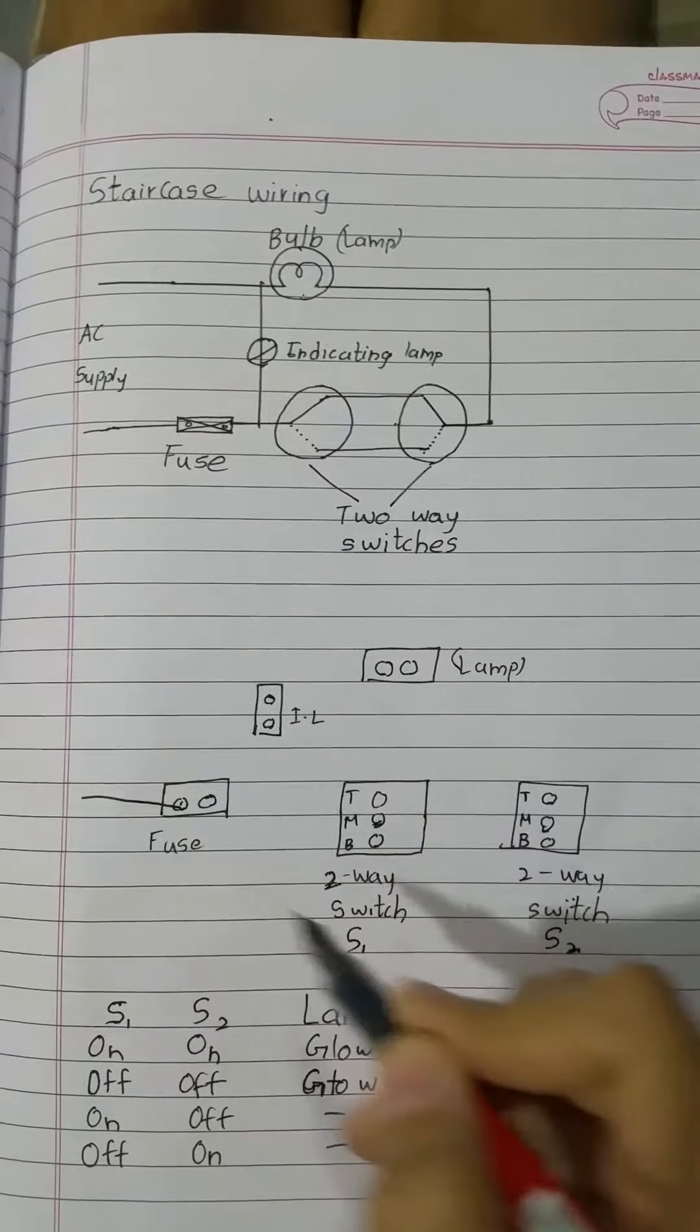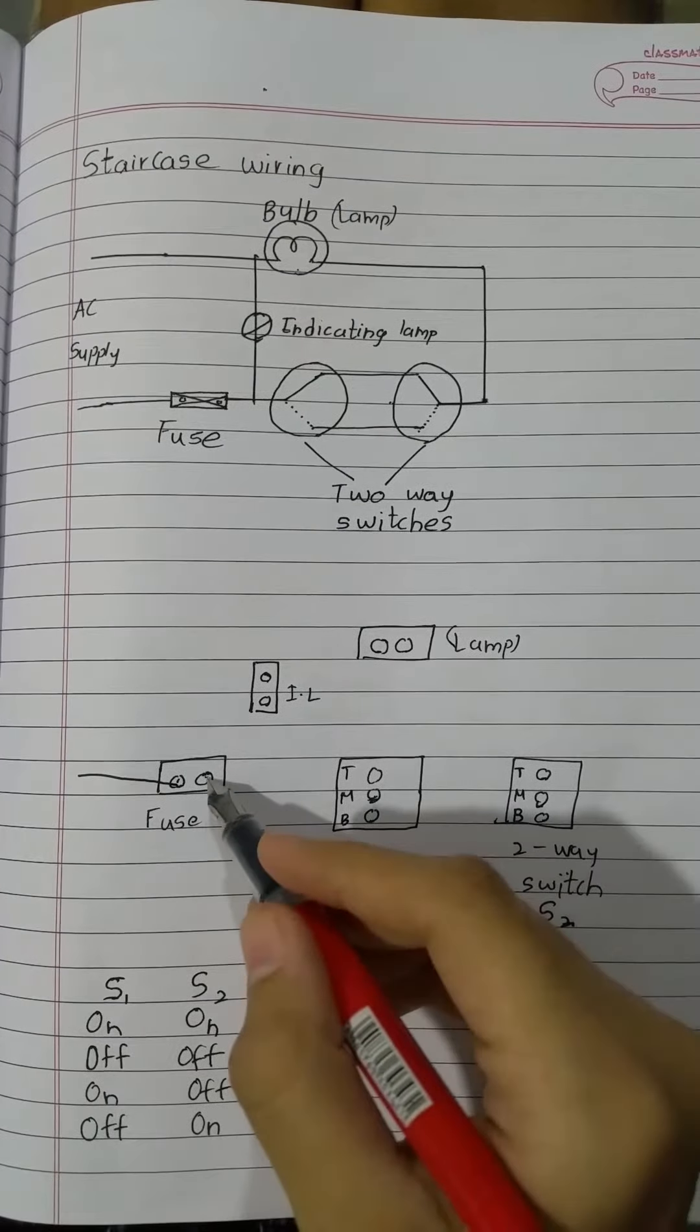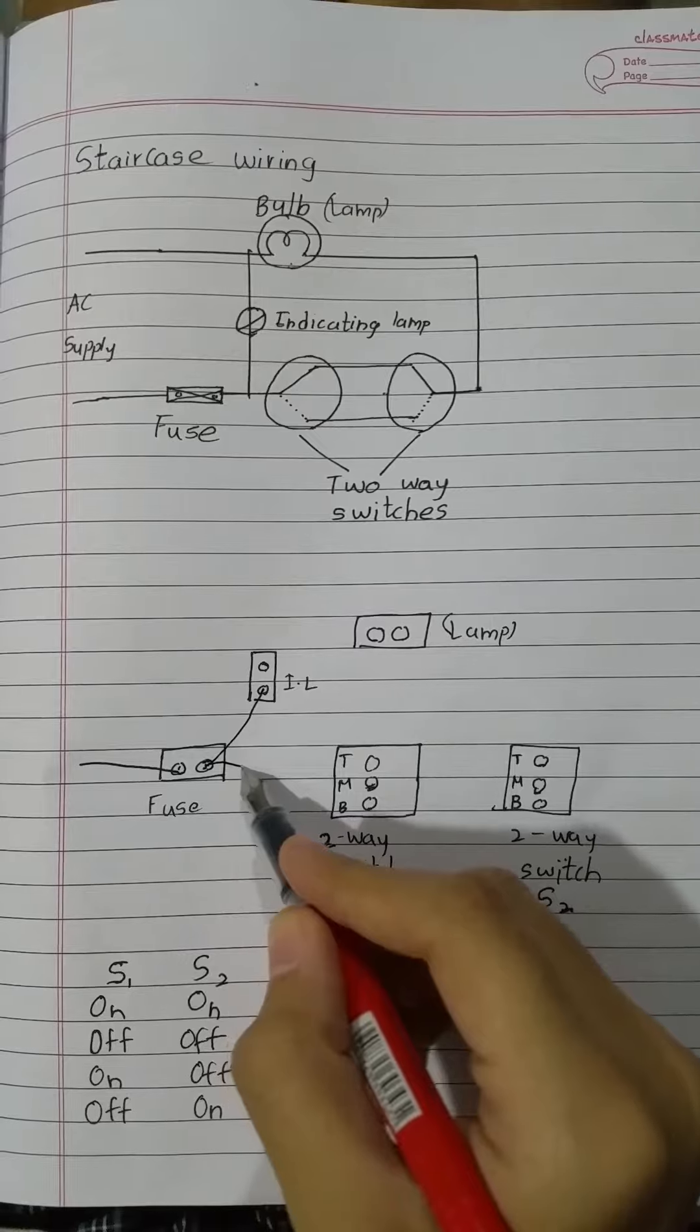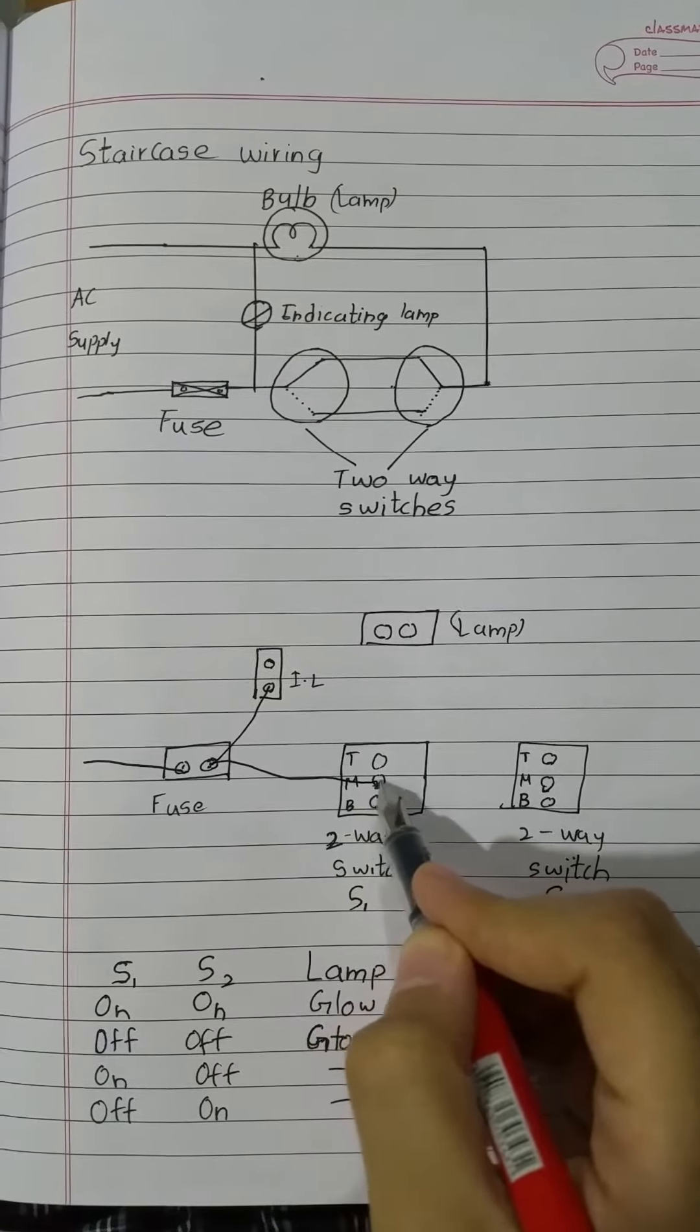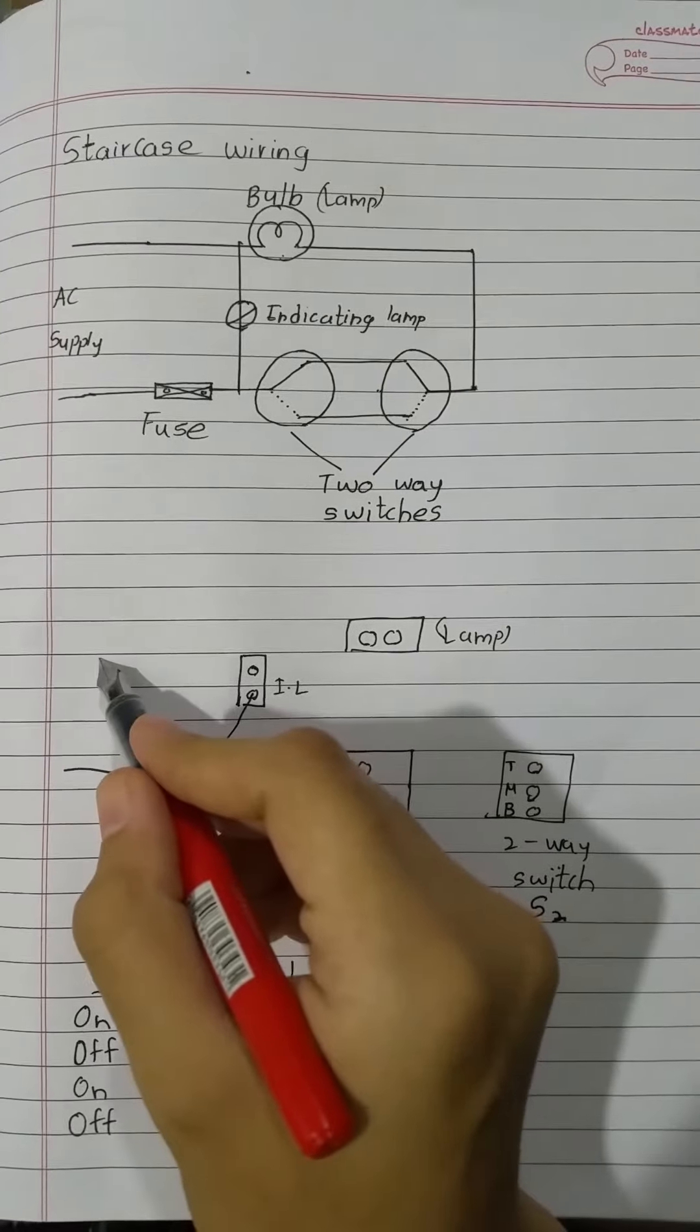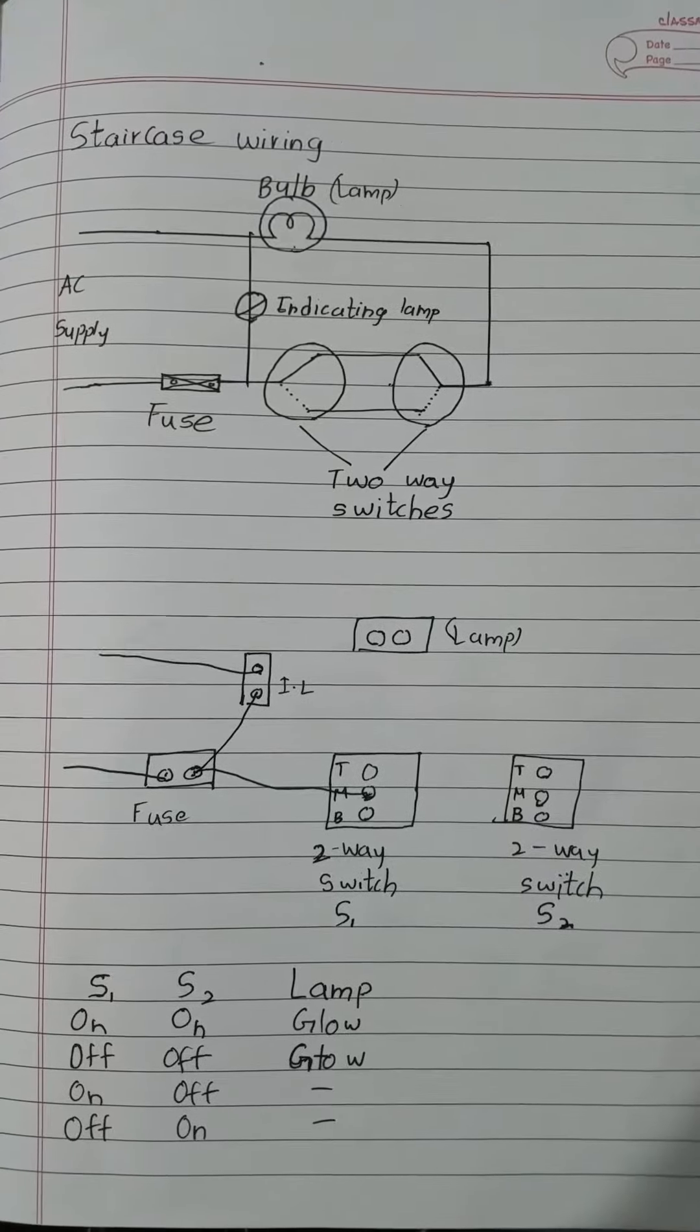to the first terminal of the fuse. The second terminal of the fuse with the pigtail will go to the indicating lamp and the middle of the two-way switch. And take the phase wire, it will go to the first terminal of